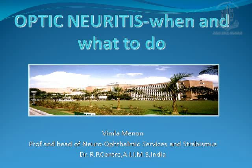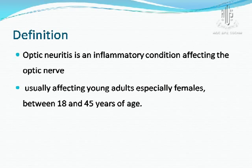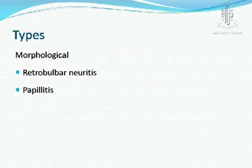Optic Neuritis — what to do and when to do it. It is defined as an inflammatory condition affecting the optic nerve, usually affecting young adults, especially females between the age of 18 to 45 years. Morphologically we can describe two types: retrobulbar neuritis, where the fundus looks normal, and papillitis, where there is disc edema with hyperemia.